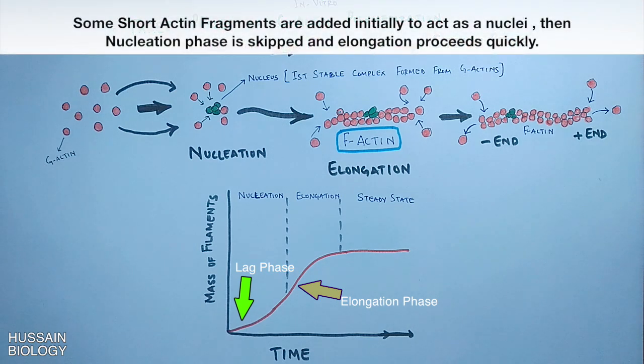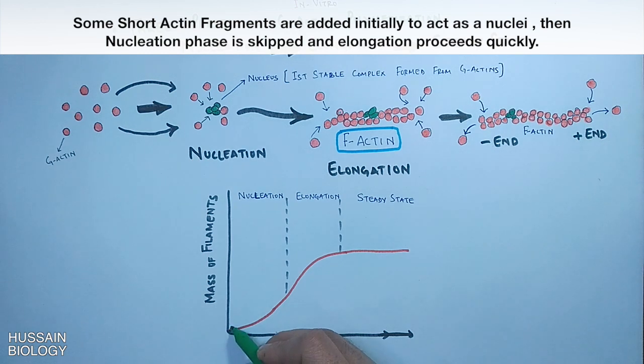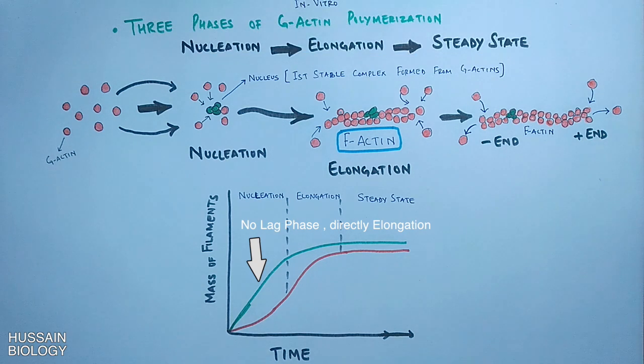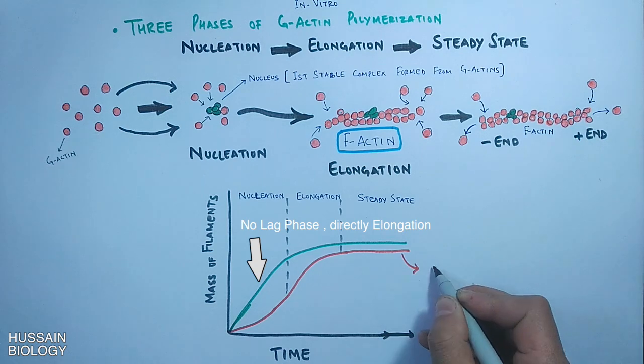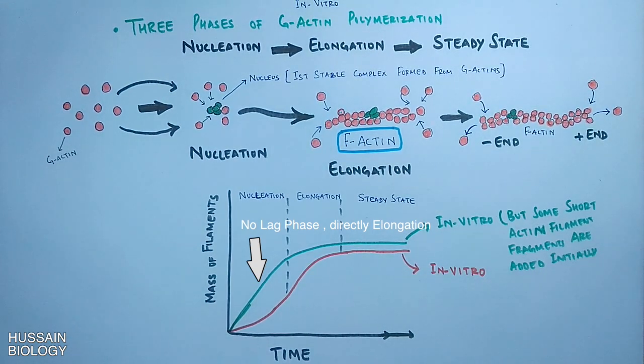But if some short stable actin filament fragments are added at the start of reaction to act as nuclei, elongation phase proceeds immediately without any lag phase or lag period, which is depicted in this curve shown here with the green color. In this curve we can see there is no nucleation phase because we have already added some short filaments which acts as nuclei, so that nucleation phase is skipped here. So this is how G-actin polymerization takes place with these three phases.